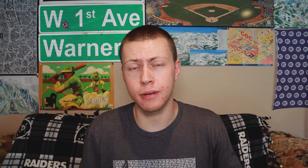Also, Time.deltaTime is getting some stability improvements to make the delta time value more consistent across frames, especially when your game is running at a fixed frame rate. Right now it's only going to be available for certain platforms, however it's going to be coming to all the other platforms very soon.